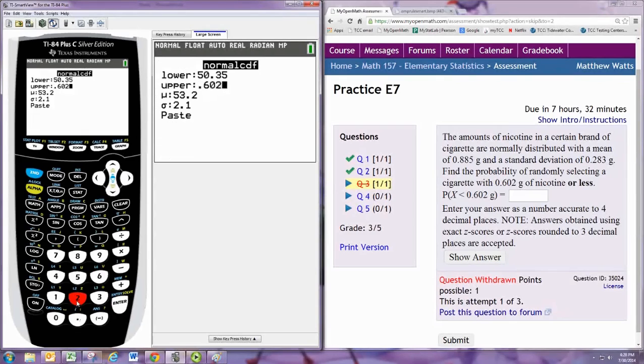Now there is no lower bound because we want all the values less than 0.602, so we trick the calculator into using a number like negative infinity, negative 10 to the 99. Then just put in your mean and your standard deviation.